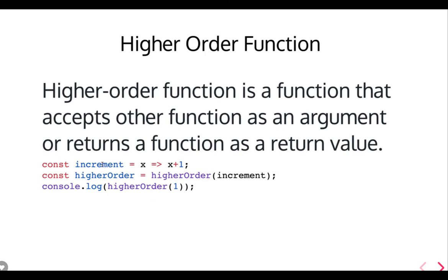Higher order functions are related to the first class citizen concept. Higher order functions are those functions which accept a function as an argument and return a function as a return value. Callback functions are a good example because they accept a function as an argument and return a function as a callback. Any basic callback example is an example of a higher order function. Array prototype methods like forEach, map, and filter are all higher order functions because they accept a function as an argument.